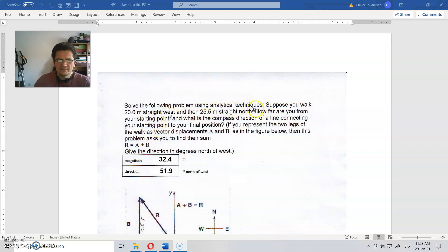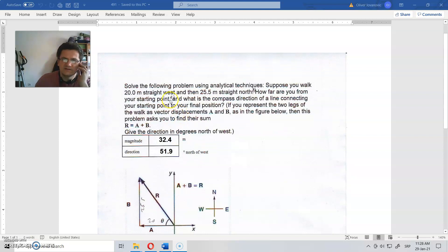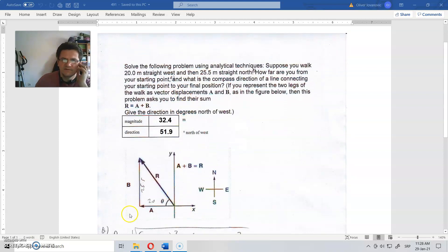The following problem uses analytical techniques. Suppose you walk 20 meters straight west and then 25.5 meters straight north. How far are you from your starting point? This distance is needed. And what is the compass direction of a line connecting your starting point and final position? That is the compass point.